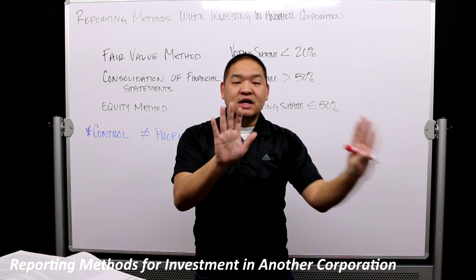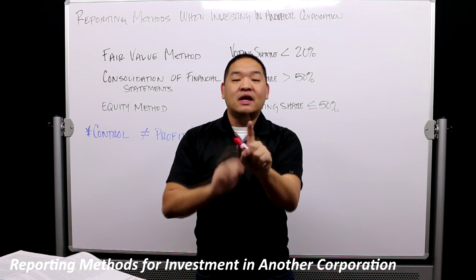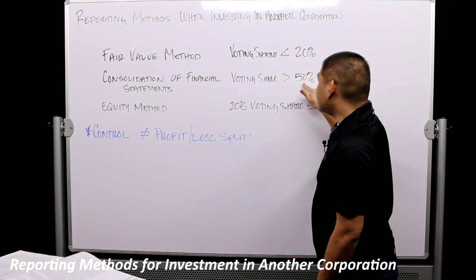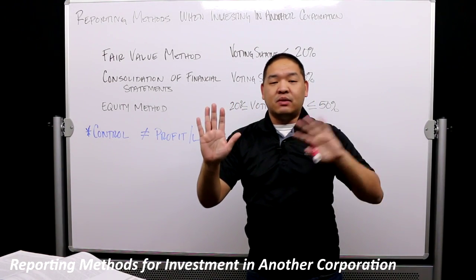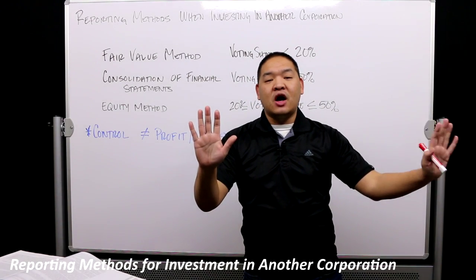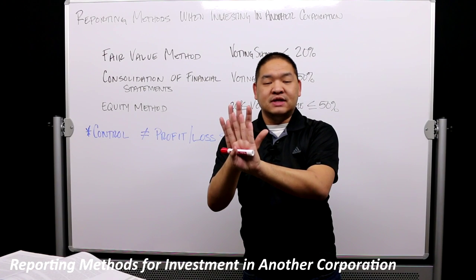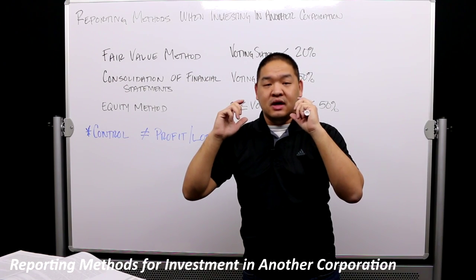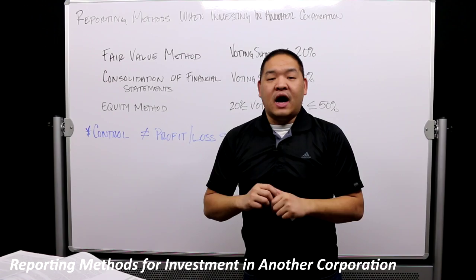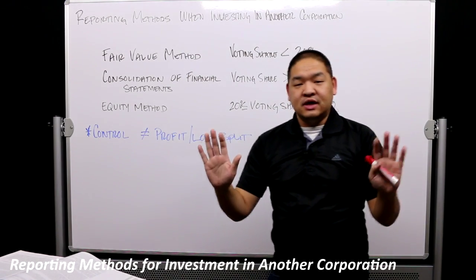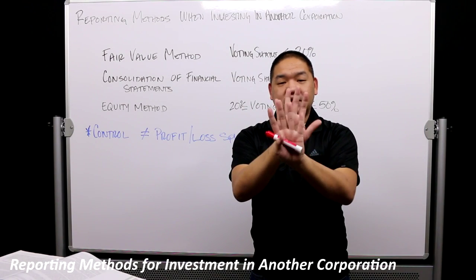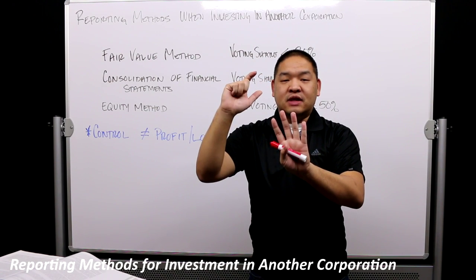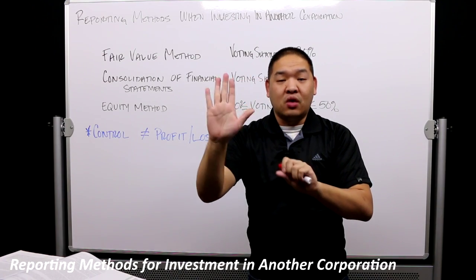We consolidate the investee's financials into the investor's financial statements even if shares are less than 100%. For example, if the investor owns 80% and someone else owns 20%, we still consolidate the entire financial statements, then make adjustments at the end of the income statement or balance sheet to show the portion not owned by the investor.